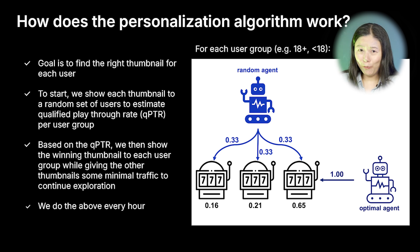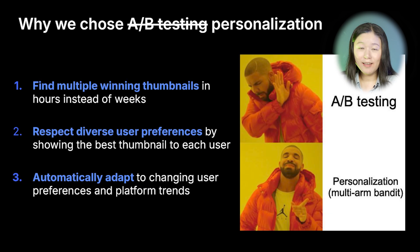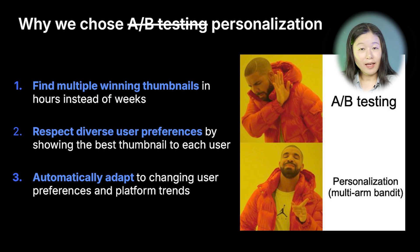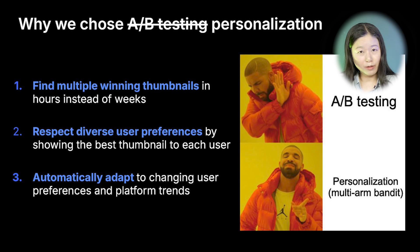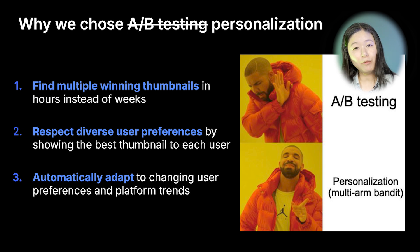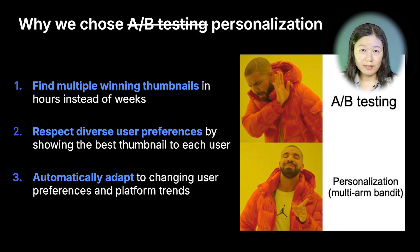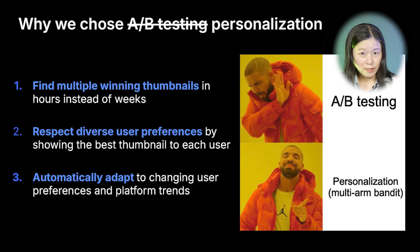You may also ask: why did you skip A/B testing? Compared to A/B testing, thumbnail personalization can allow you to find multiple winning thumbnails in hours instead of weeks. Secondly, it also allows you to respect the diverse preferences of users so you can tailor to each of them with the most relevant thumbnail, instead of only attracting the majority while losing users who may not resonate with a single winning thumbnail. Last but not least, testing is a one-time deal, but thumbnail personalization can automatically adapt to changing user preferences and platform trends.